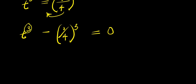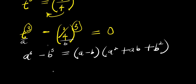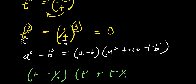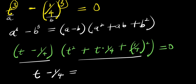And this equals 0. Now, this leads us to the fact that there is power of 3 here and power of 3 here with a minus sign. So to expand this I will make use of the identity: a to the power of 3 minus b to the power of 3 equals a minus b, times a squared plus ab plus b squared. Applying that, I equate each factor to 0: t minus 1 over 4 equals 0, or the quadratic factor equals 0.